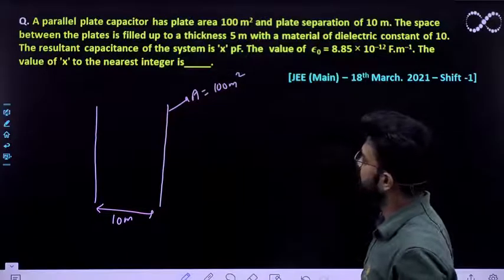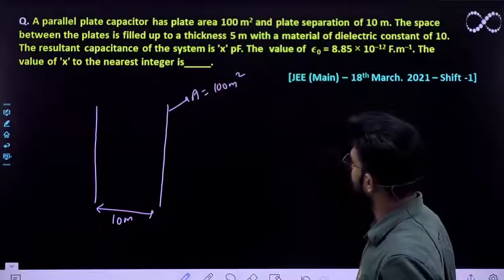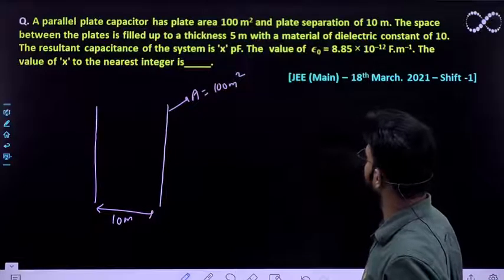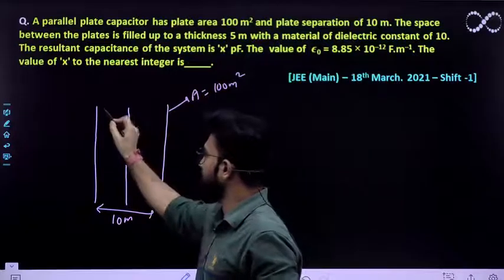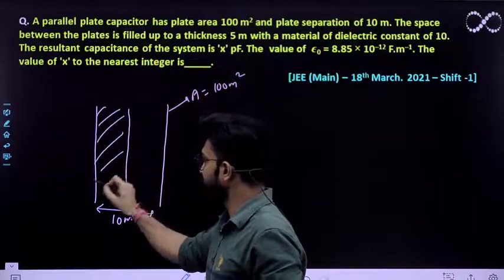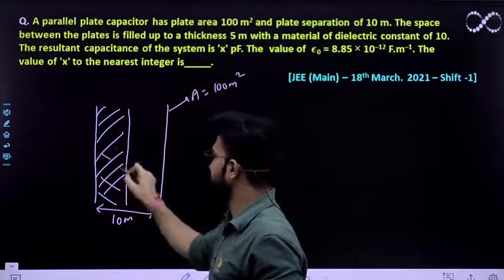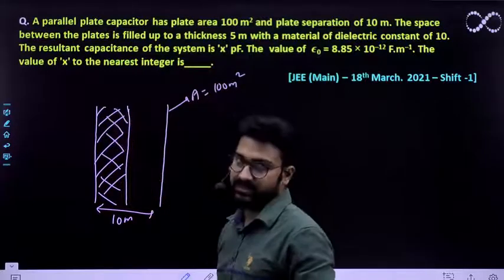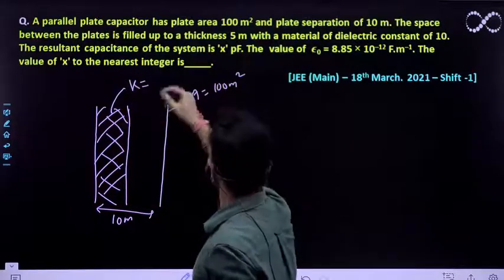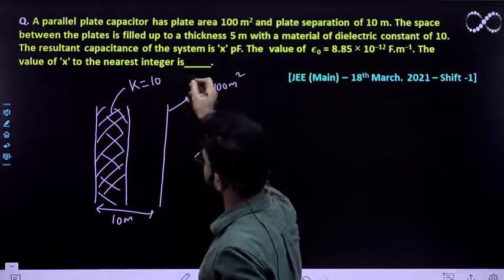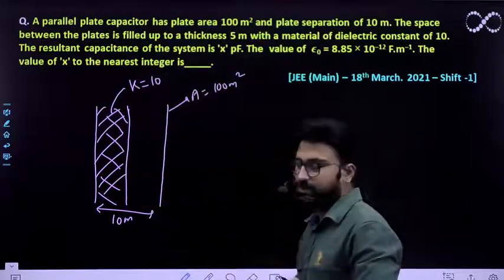The space between the plate is filled with the dielectric of thickness 5 meter with the material of dielectric constant 10. So it means 5 meter, that means that almost this half length is filled with the dielectric constant which is already given which is 10. So the dielectric constant already given is 10.